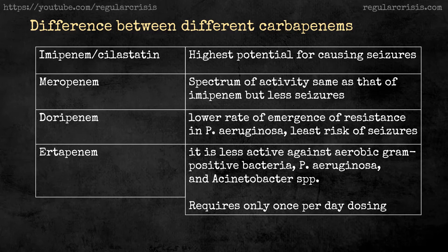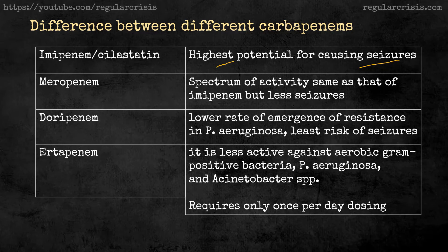Imipenem was the first carbapenem to be discovered. It has very broad spectrum activity against gram-positive, gram-negative, and anaerobes. However, the major problem with imipenem is that it has the highest potential for causing seizures. If you have a patient with CNS problems, epilepsy, meningitis, or renal failure, using imipenem poses a high risk of inducing seizures.